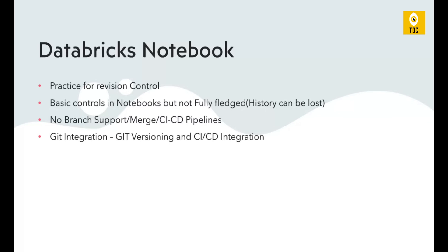Similarly, if you have worked in Java, .NET, or any programming language, you might have used a Git repository. Databricks also has support for Git, but by default it is not integrated with GitHub. It provides only basic revision control — it just tracks changes to a notebook, but it is not a sophisticated version control system. The history of a notebook can be lost if the notebook is deleted, renamed, or moved from one location to another.